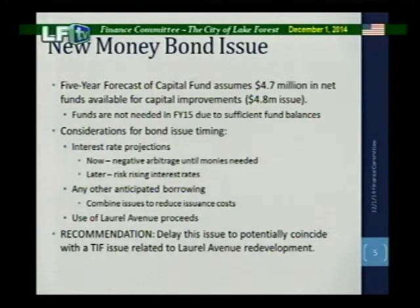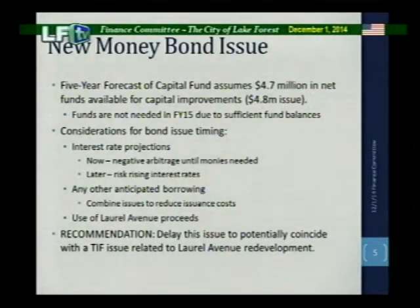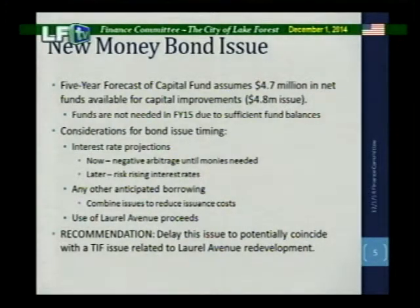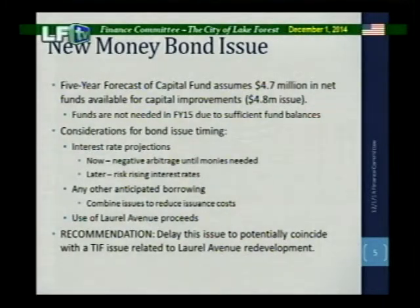Included in your packet on page seven is an analysis reflecting the potential break-even for delaying the bond issue. The question was: what would rates rise to if the bond issue was delayed, to still result in the same amount of interest over the projected life of the bond issue? Currently the interest rate would average about 3% based on current bond market conditions. If the bond issue was delayed 18 to 24 months and rates rose to over 3.26%, it would cost the city more interest over the life of the bonds than issuing now — so about 26 basis points is the break-even.